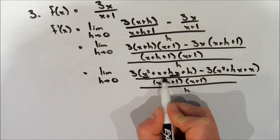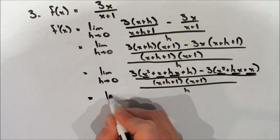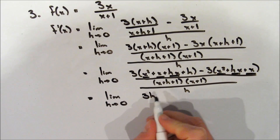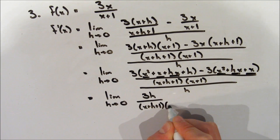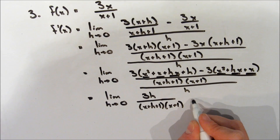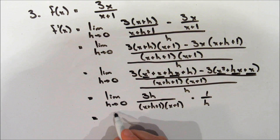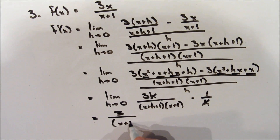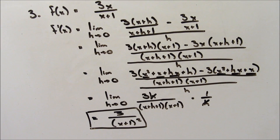We see that the x squared, hx, and x terms appear in both the positive and negative parts, so they all cancel. We're left with 3h over x plus h plus 1 times x plus 1. Multiplying by 1 over h instead of dividing by h, the h in 3h cancels with the h in 1 over h. Taking the limit as h approaches 0, substituting 0 for h, we get 3 over x plus 1 squared.